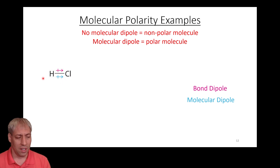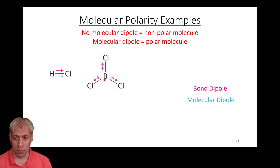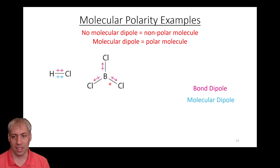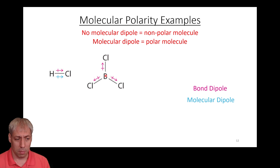HCl has two different atoms with different electronegativities, so it has a bond dipole — and since that bond makes up the entire molecule, HCl has a molecular dipole. Looking at BCl₃, each individual boron-chlorine bond has a bond dipole — chlorine is more electronegative, so we draw a vector. But BCl₃ is a trigonal planar molecule, and when you take all these vectors and add them together, they cancel out — like a tug of war where each is pulling equally. So despite having three polar bonds, BCl₃ has no molecular dipole and is a non-polar molecule.